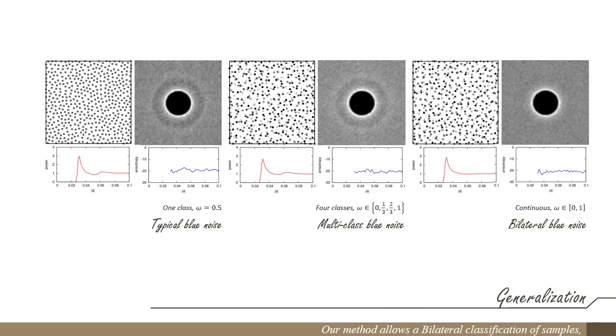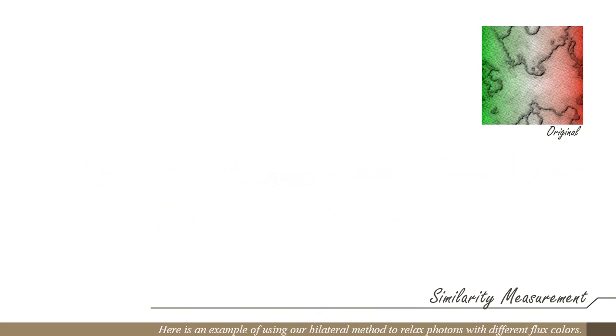Our method allows bilateral classification of samples, in which distribution uniformity depends on both sample positions and features. Here is an example of using our bilateral method to relax photons with different flux colors.